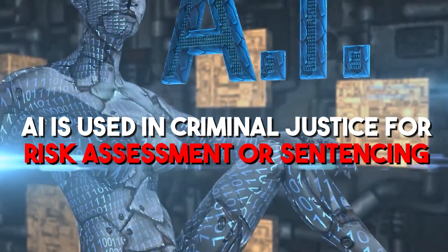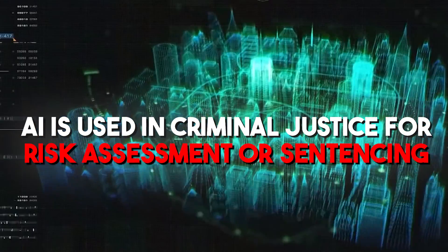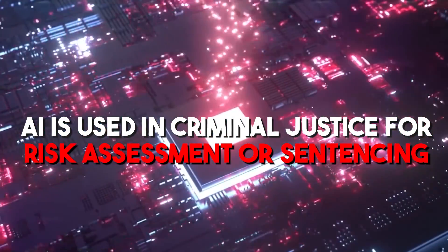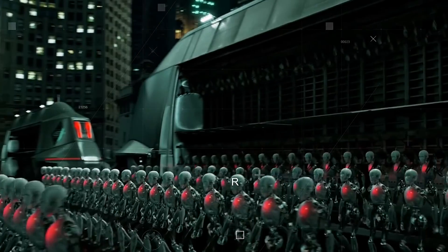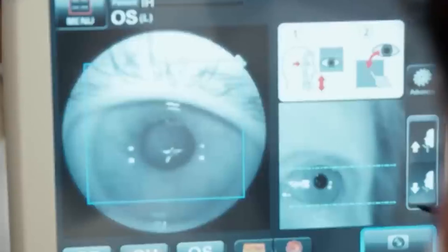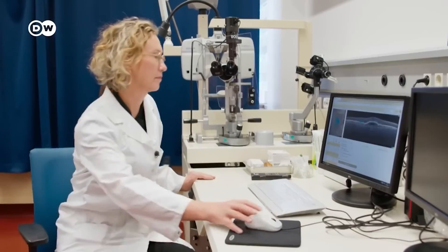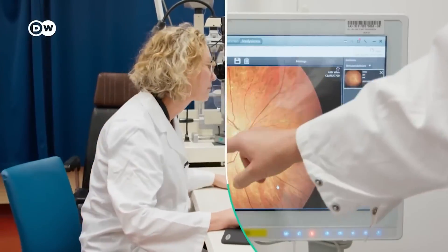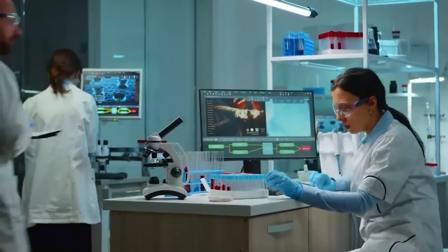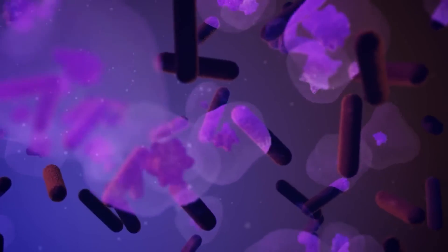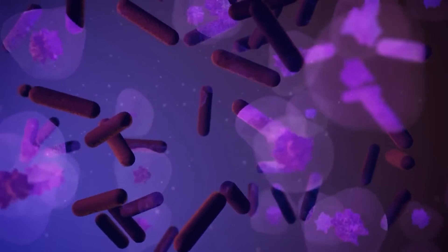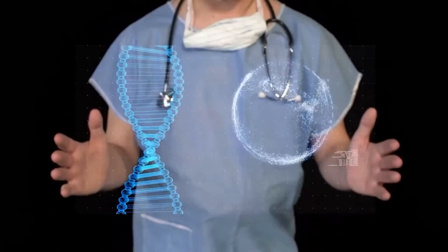Similarly, AI is used in criminal justice for risk assessment or sentencing, which is another example. If this AI starts reflecting systemic biases, it could lead to unfair sentencing, disproportionately affecting certain groups. This is crucial to prevent unjust treatment and uphold the principles of equality and fairness in the justice system. It ensures that AI tools do not perpetuate or exacerbate existing societal inequities.